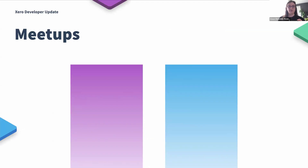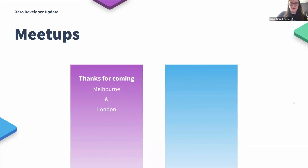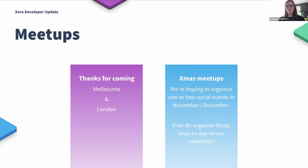I'll move on quickly to talking about meetups. We've actually run a couple of meetups so far this year — we hosted one in Melbourne and more recently in London. It was really wonderful to see so many Xero developers and apps from our ecosystem come along to those events. I thought I'd give you a little sneak preview that we are hoping to organize a couple of social events in November and December for the holiday period. If we do pull those together, please keep an eye on our newsletter for the invites.